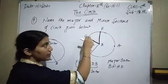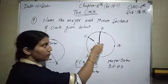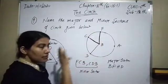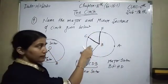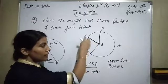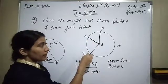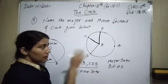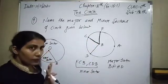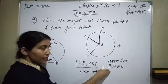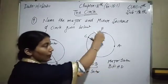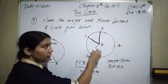You have to write down the points CFB or BFC — any way you can write it. Similarly you can write BCD or CDB in any order. And for this bigger portion — that is our major sector — you have to write down all the points from this to this.